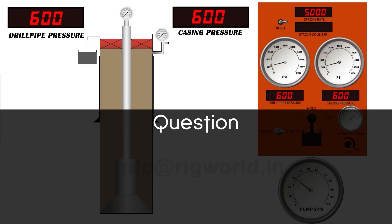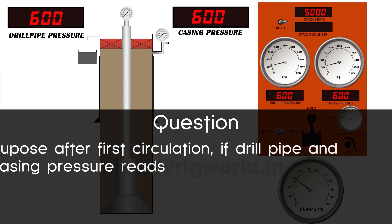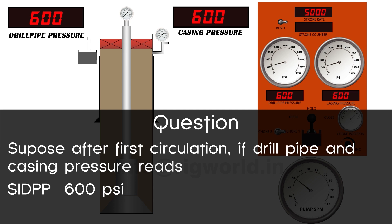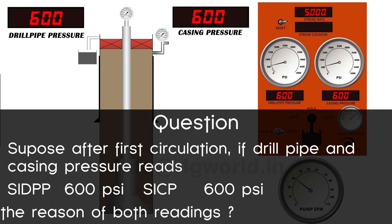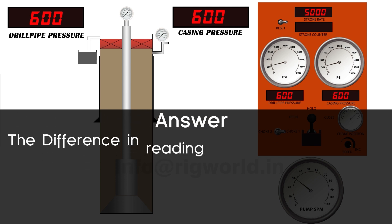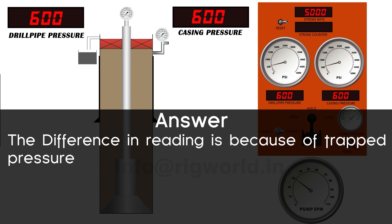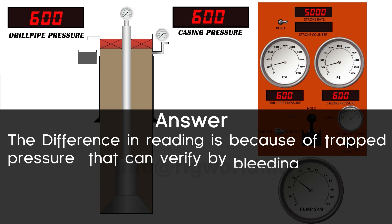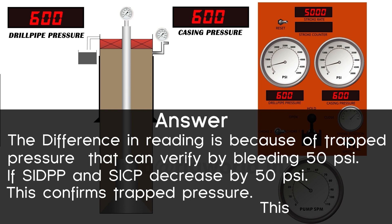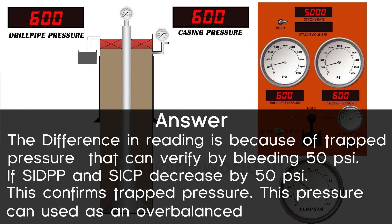Question 1: suppose after the first circulation, if the drill pipe and casing pressure gauge readings differ — what is the reason? The difference in readings is because of trapped pressure. This can be verified by bleeding 50 psi. If SIDPP and SICP both decrease by 50 psi, this confirms trapped pressure. This pressure can be used as overbalance or can be bled off.